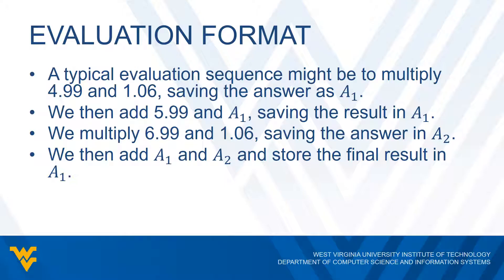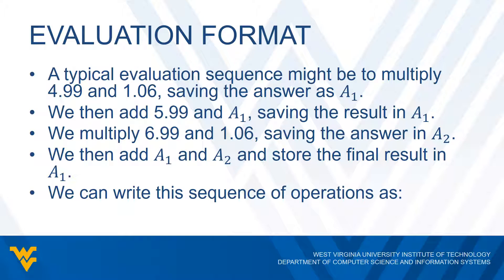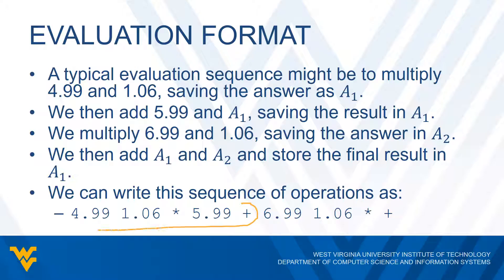Finally, add A1 and A2 and store that result in A1. We can rewrite this sequence of operations as: enter $4.99 then $1.06 and multiply — giving some result — then $5.99 and plus to add everything together. Then $6.99, $1.06, multiply. So the first part gives us one result, the second part gives us another result, and then we add them together to get the final result.